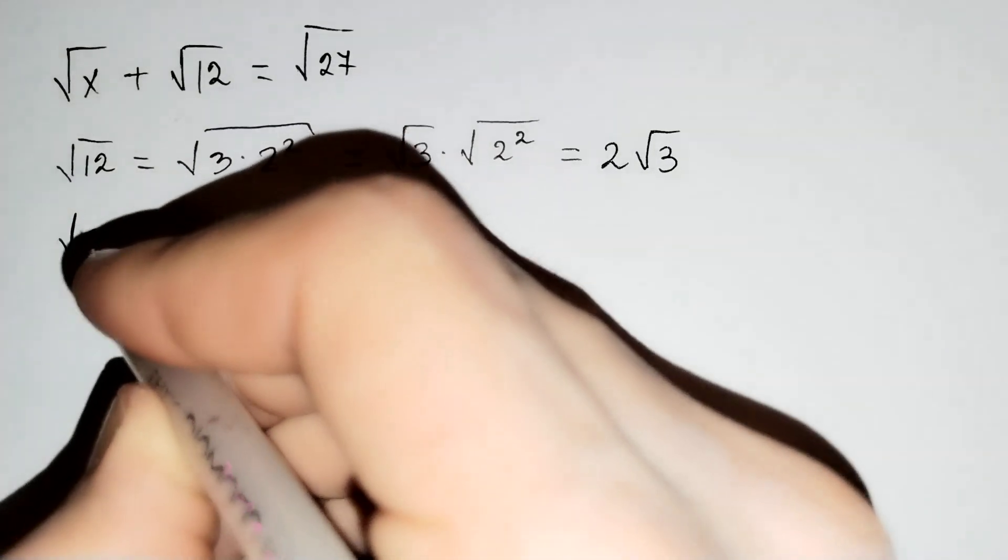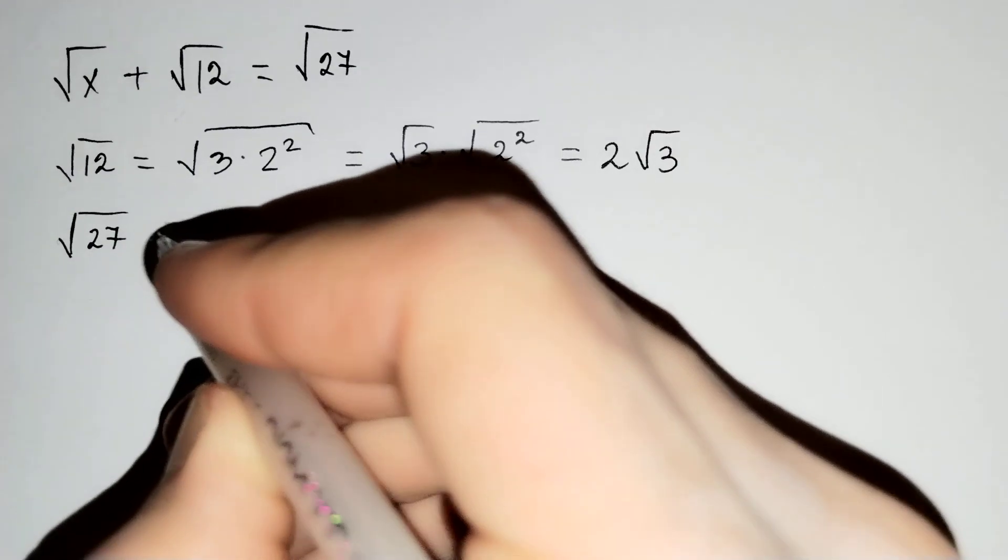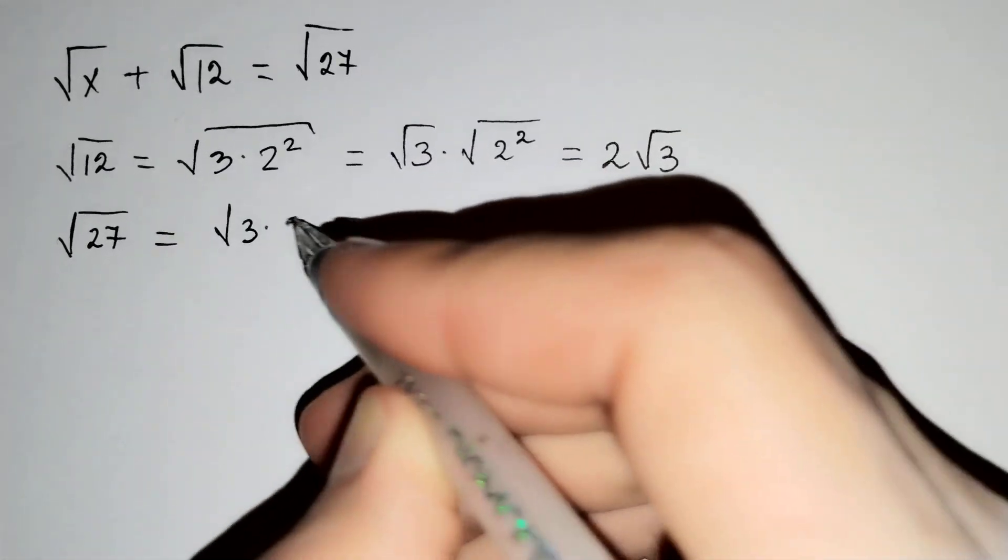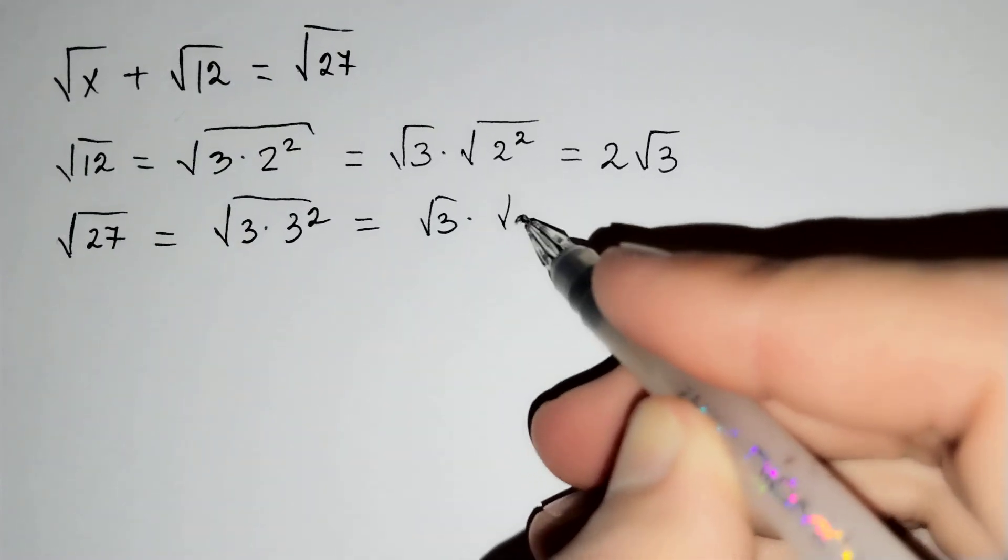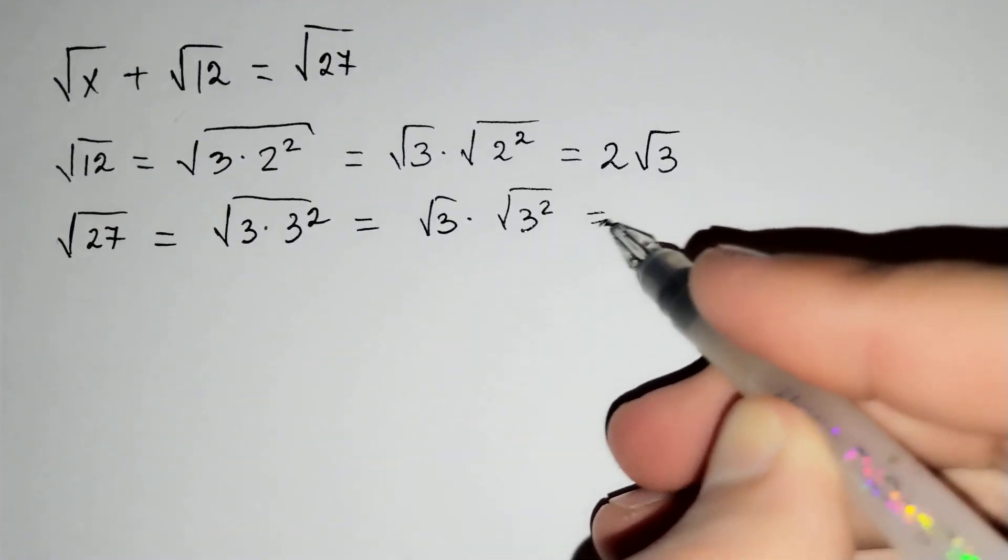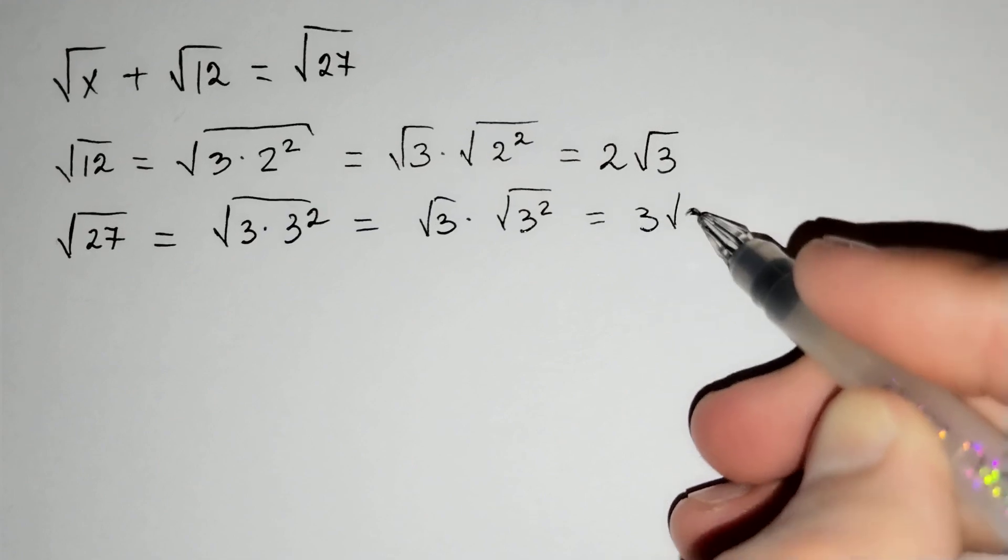Then, the square root of 27 equals 3 times 3 squared, which is the square root of 3 times square root of 3 squared, and equals 3 square root of 3.